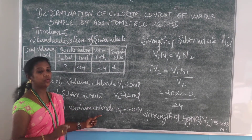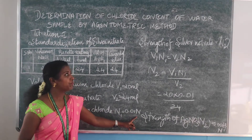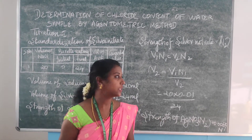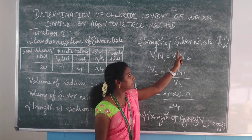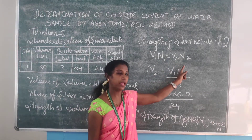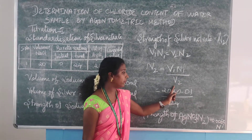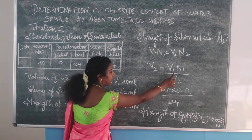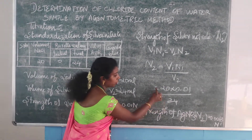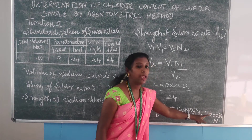Strength of sodium chloride: we know the value of the pipette solution, so N1 is equal to 0.01 normality. We have to find the strength of silver nitrate, which is N2. Applying the volumetric analysis formula V1N1 = V2N2, N2 = V1 × N1 / V2. We know V1 = 20 ml, N1 = 0.01 normality, and V2 = 24 ml. Dividing, we get the strength of silver nitrate N2 = 0.0083 normality.